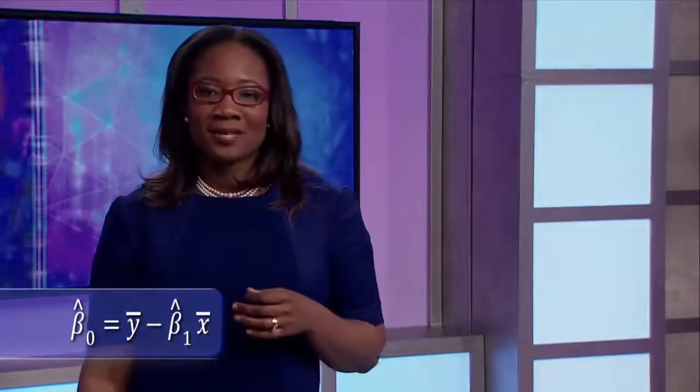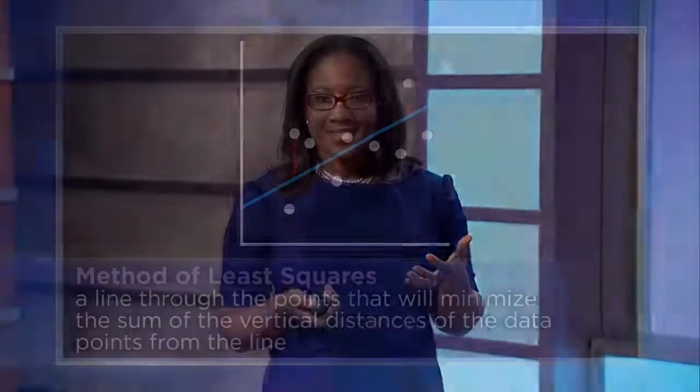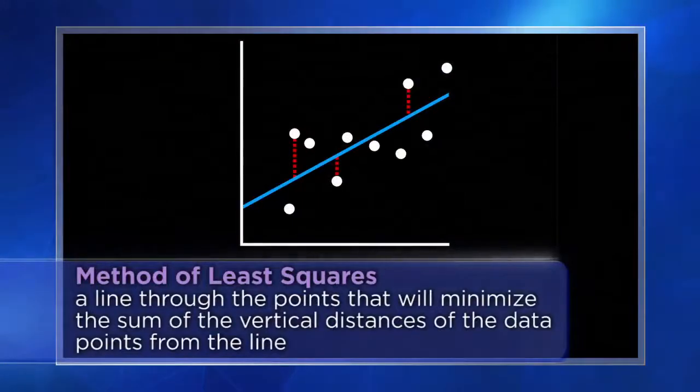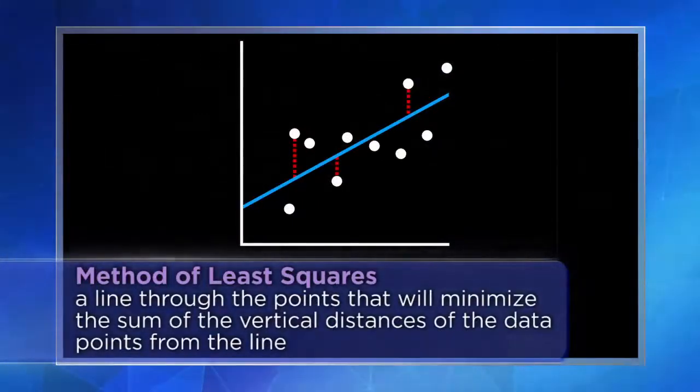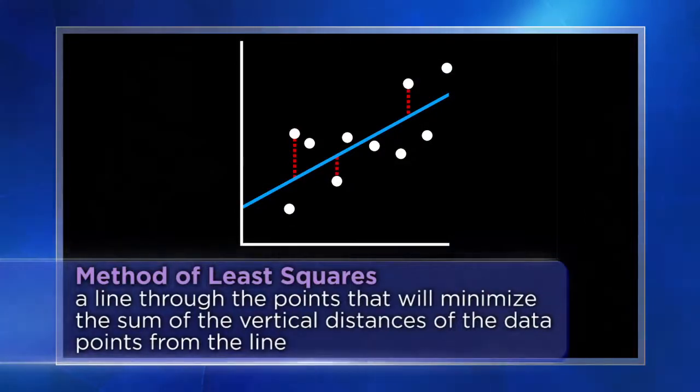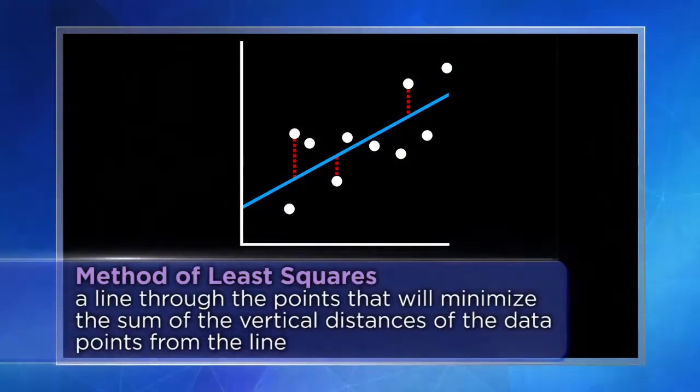We estimate β̂₀ cleanly: β̂₀ = ȳ − β̂₁ · x̄. The way we estimate our model parameters is through the method of least squares. This allows us to fit the line through the points that minimizes the sum of the vertical distances from the points to our regression line — minimizing Σ(y − ŷ)².